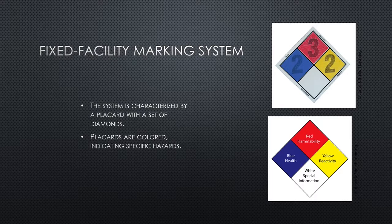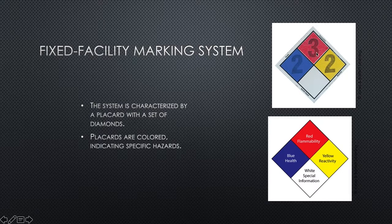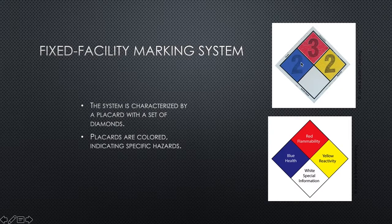The placards are color-coded, and each small diamond is rated on a scale of zero — no hazard — to four, which is severe risk. So if you were looking at a diamond and saw a three in the red, that's pretty risky for flammability, as it goes all the way up to four. A two would indicate moderate health risk and reactivity risk.